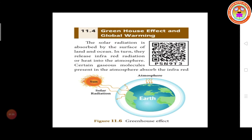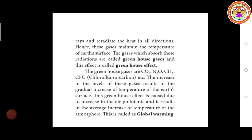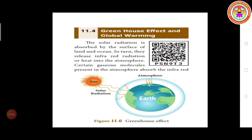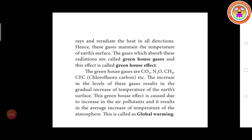Certain gas molecules present in the atmosphere absorb the infrared and emit it to the earth. The infrared rays are re-radiated as heat in all directions. Hence these gases maintain the temperature of the earth's surface. The gases which absorb the radiations are called greenhouse gases.